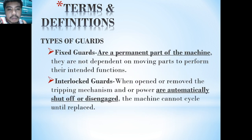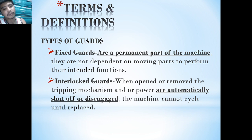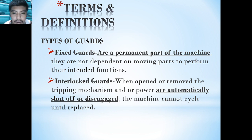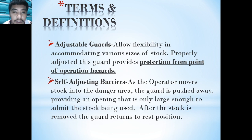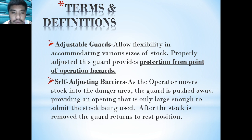Interlock guards, when opened or removed, trip the mechanism and cut power to make it automatically shut off or disengage — the machine cannot cycle. Adjustable guards allow flexibility in accommodating different sizes of stock for protection from point-of-operation hazards. Self-adjusting barriers: as the operator moves stock into the danger area, the guard is pushed away, providing an opening only large enough to admit the stock being used.